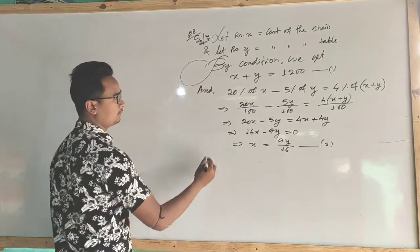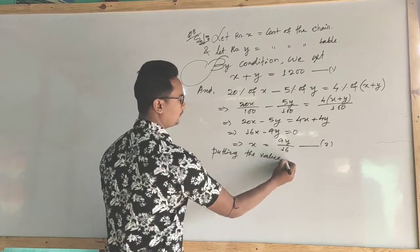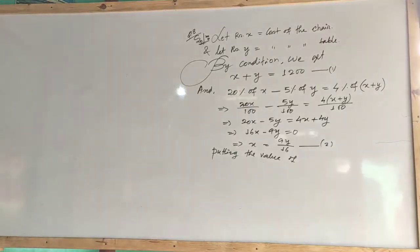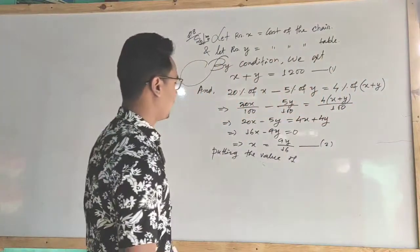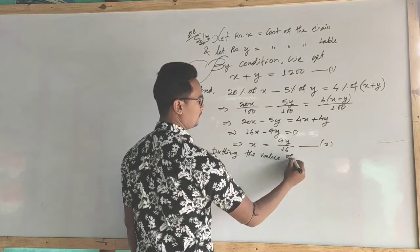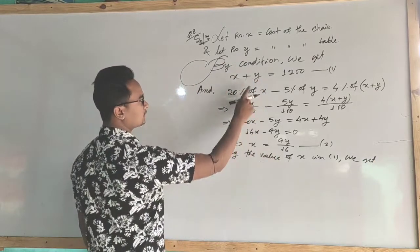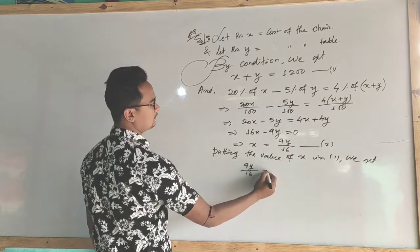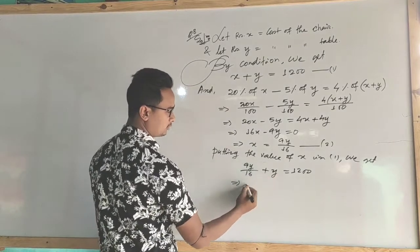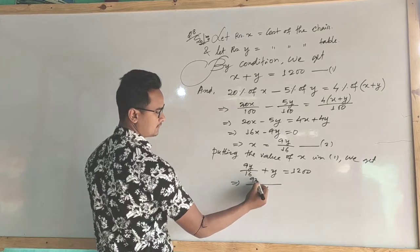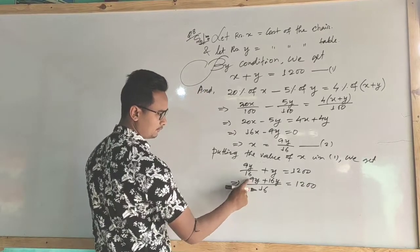This is equation number 2. Then putting the value of X in equation 1, we get one of the values. 9y plus 16y equals 1200, which implies y equals 48.